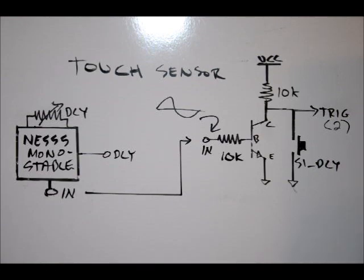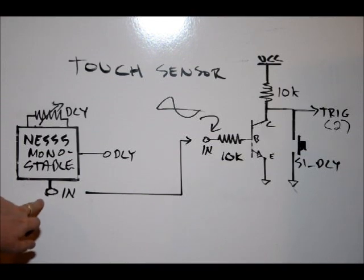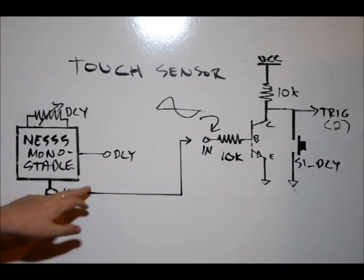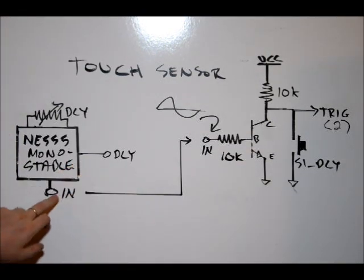Before we start, I want to talk again about our 555 timer monostable mode. This is the block. This is our input trigger pin, which is pin 2 on the 555 timer. If you haven't seen the tutorial, it's linked below, tutorial number 2 on 555 timer monostable mode. This is our adjustable delay potentiometer, our output labeled delay, and our input trigger.